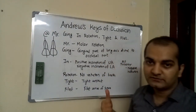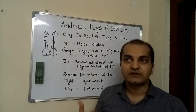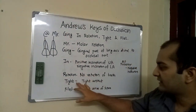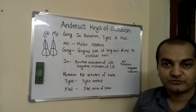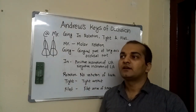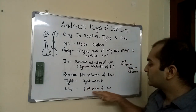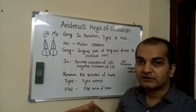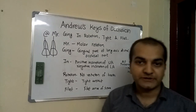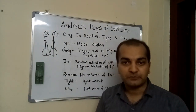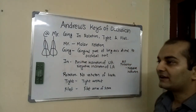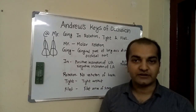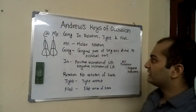Rotation — there should not be any rotation present in the teeth; that is the fourth key of occlusion. The fifth is Tight — tight contact should be present between the teeth. And Flat — the plane of occlusion should be flat; the depth of the curve of Spee should not be more than 1.5 mm. These are the six keys of occlusion according to Andrews.